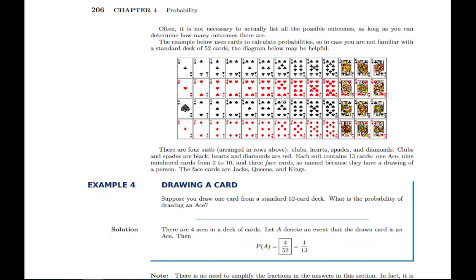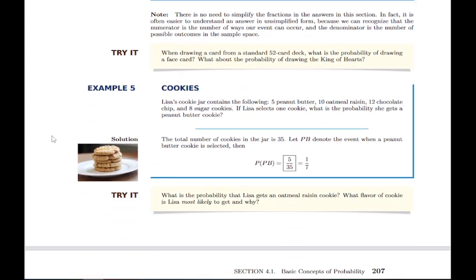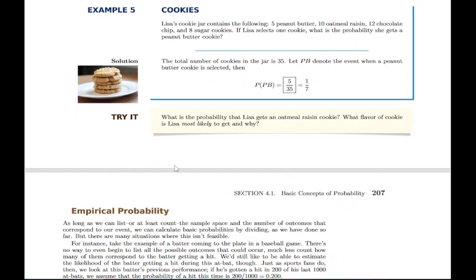There's a diagram here that you might find helpful of a standard deck of cards. There are 52 cards in these four suits, and you can read the rest of the description there, but you can refer to this whenever you need to for questions involving cards if you're not familiar with that deck. There's another example here of the same thing you can follow through, and that gives us a sense of that theoretical probability basis.